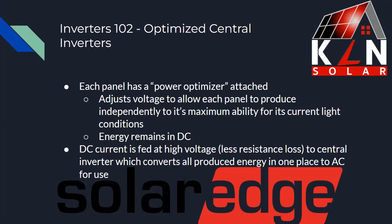What are optimized central inverters? Each panel has a power optimizer attached to it rather than an inverter. What these do is adjust the voltage to allow each panel to produce independently using a concept called maximum power point tracking. The energy remains in DC from the panel level and is fed at a high voltage, where there's less resistance loss, to the central inverter, which converts all the energy produced in one place to AC. Most commonly with these, you'll see SolarEdge as the brand.